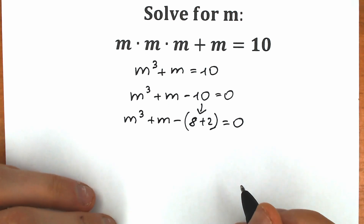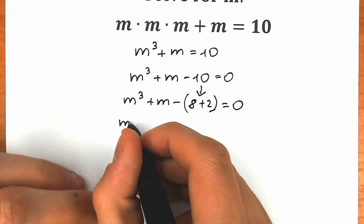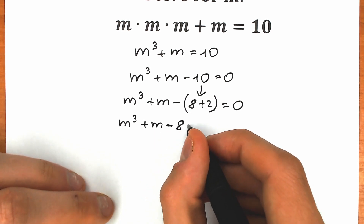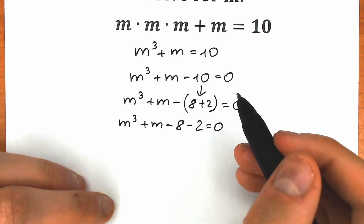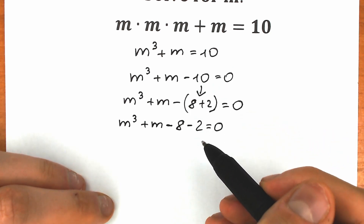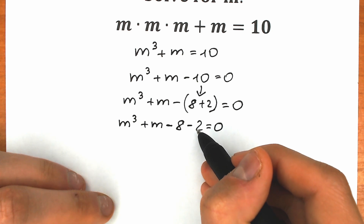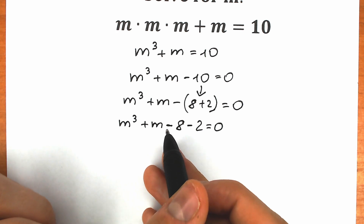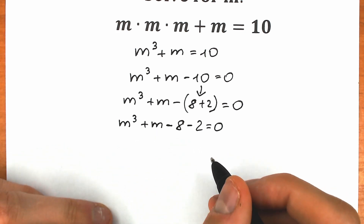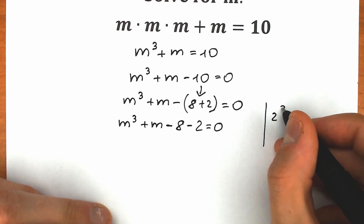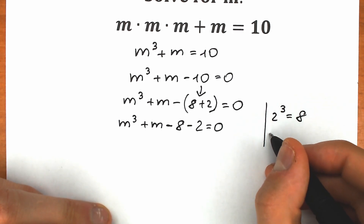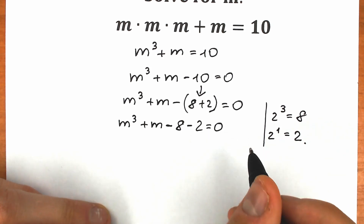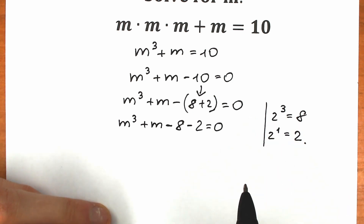So we have m cubed plus m, and instead of 10 we write 8 plus 2, equal to zero. Let's open our parentheses: m cubed plus m minus 8 minus 2 equals zero. As mentioned, we expressed 10 as 8 plus 2 so we can replace 8 with 2 cubed and 2 with 2 to the first power. So let's change 8 to 2 cubed — since 2 cubed equals 8 — and 2 to 2 to the first power.